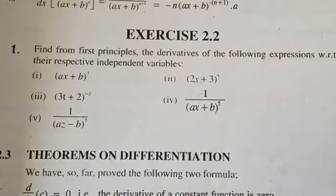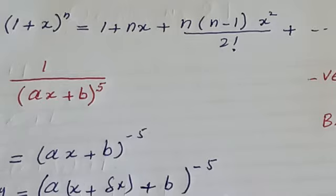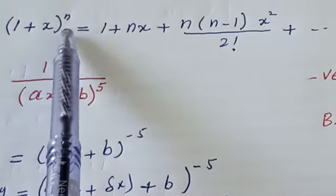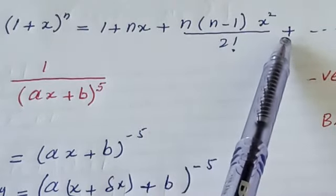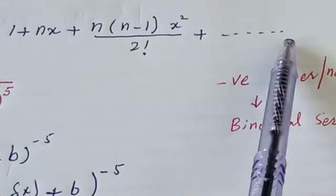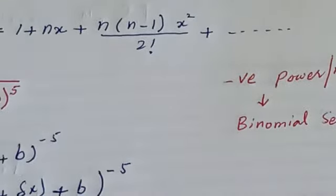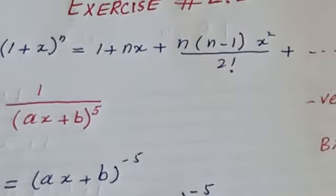Before starting the question, I will revise binomial series and binomial expansion, because many students are confused between the two. Always remember: binomial series is used only for negative power or non-integral power of a variable. It is written as (1+x)^n = 1 + nx + n(n−1)/2! · x² + n(n−1)(n−2)/3! · x³ + ... and so on with no bound — there is no limit to the number of terms.